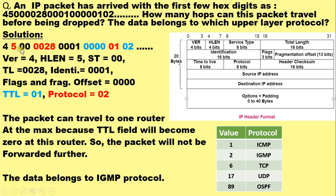The next two hexadecimal digits correspond to the service type field, which specifies the type of service depending on reliability, throughput, and cost requirements, and assigns priority to services. The next four hexadecimal digits correspond to the total length field — here 0028 in hexadecimal, which is 40 bytes in decimal. The identification field corresponds to 0001, followed by flags and fragment offset.